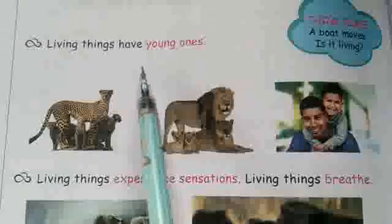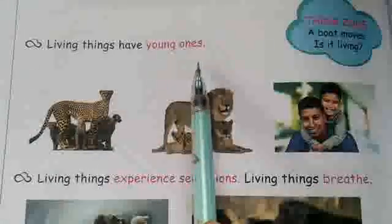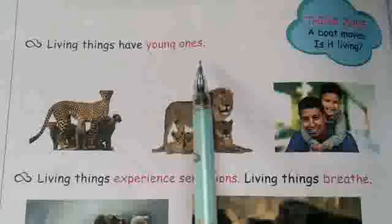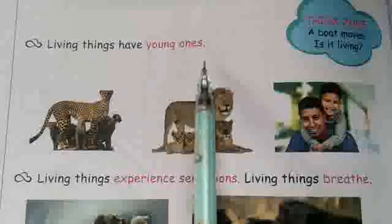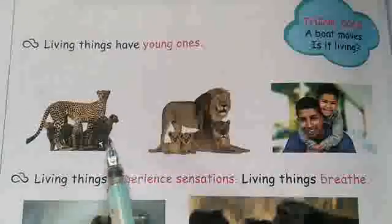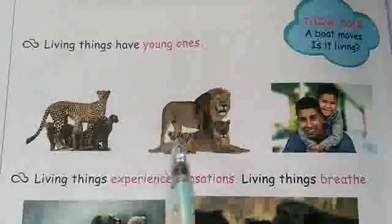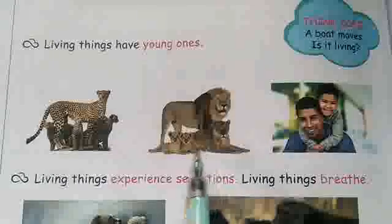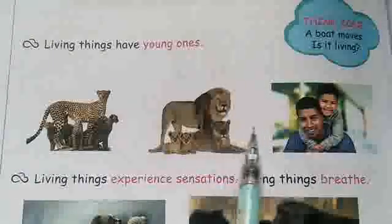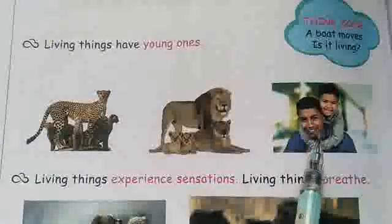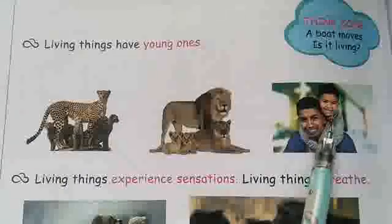Living things have young ones. This means when a person or animal finds young ones — they can reproduce. For example, human beings: a man and a girl can have young ones.